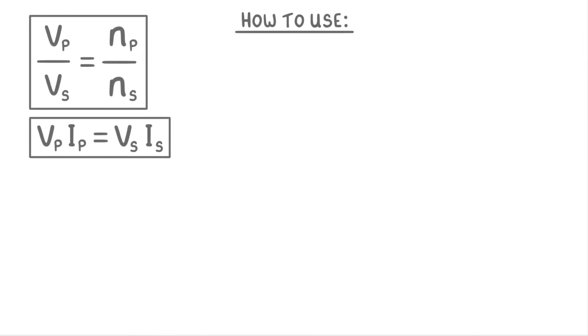In this video, we're going to cover how to use these two equations, which together allow us to figure out exactly how the potential difference and the current vary with the number of turns on each coil. In both equations, V is the potential difference, n is the number of turns on the coil, and I is the current.